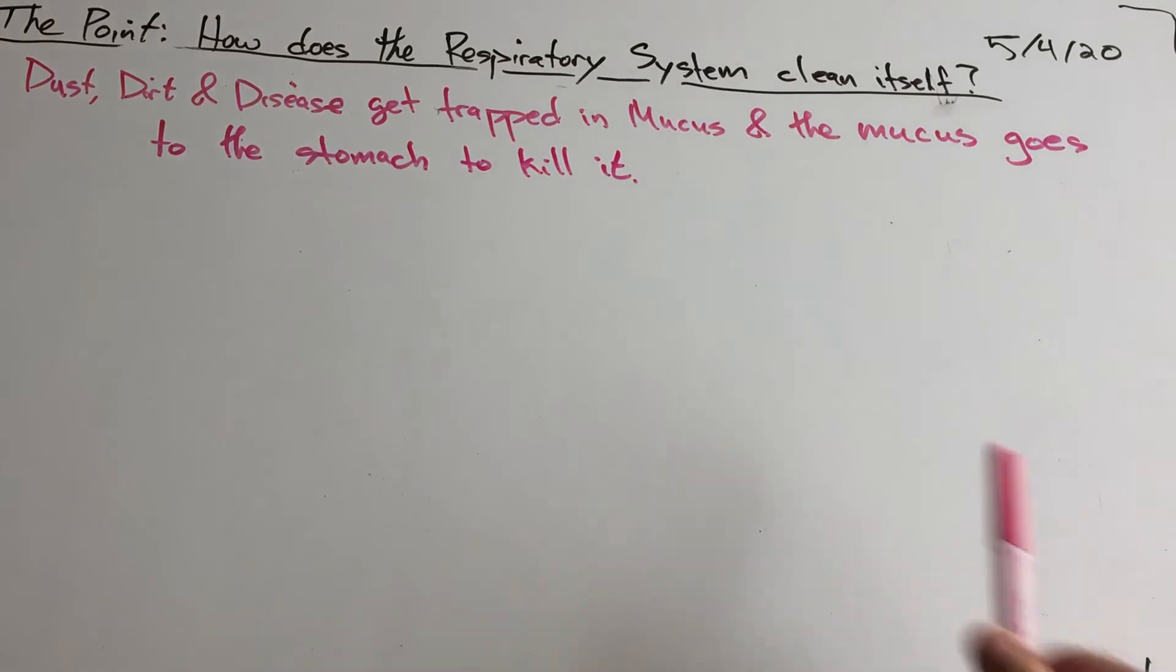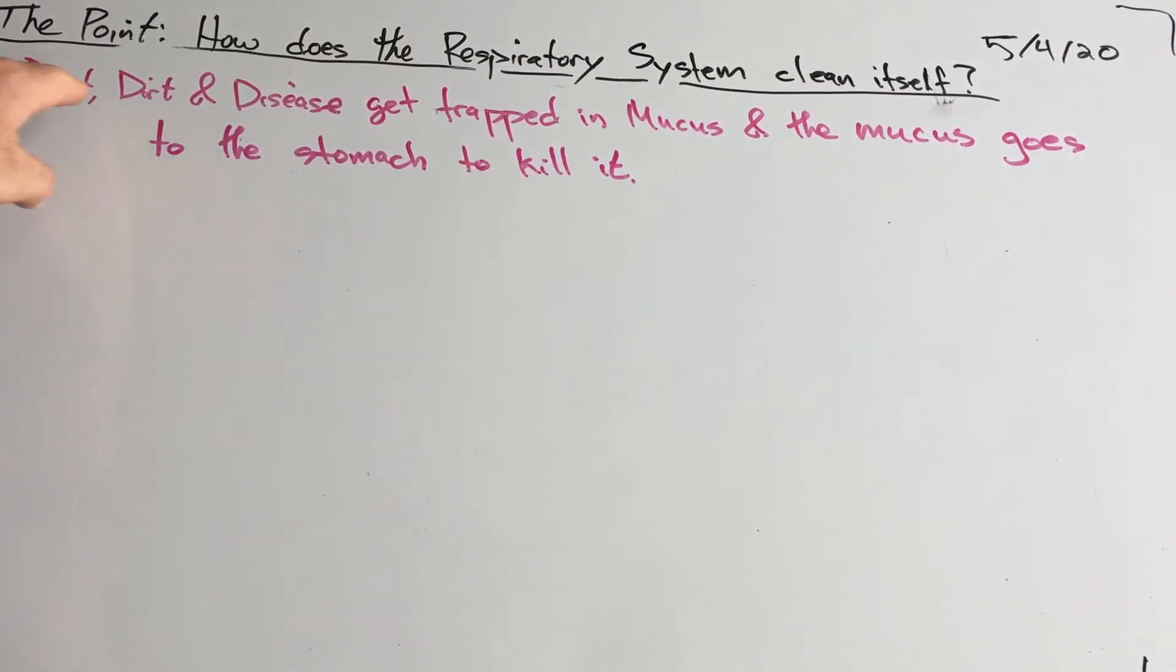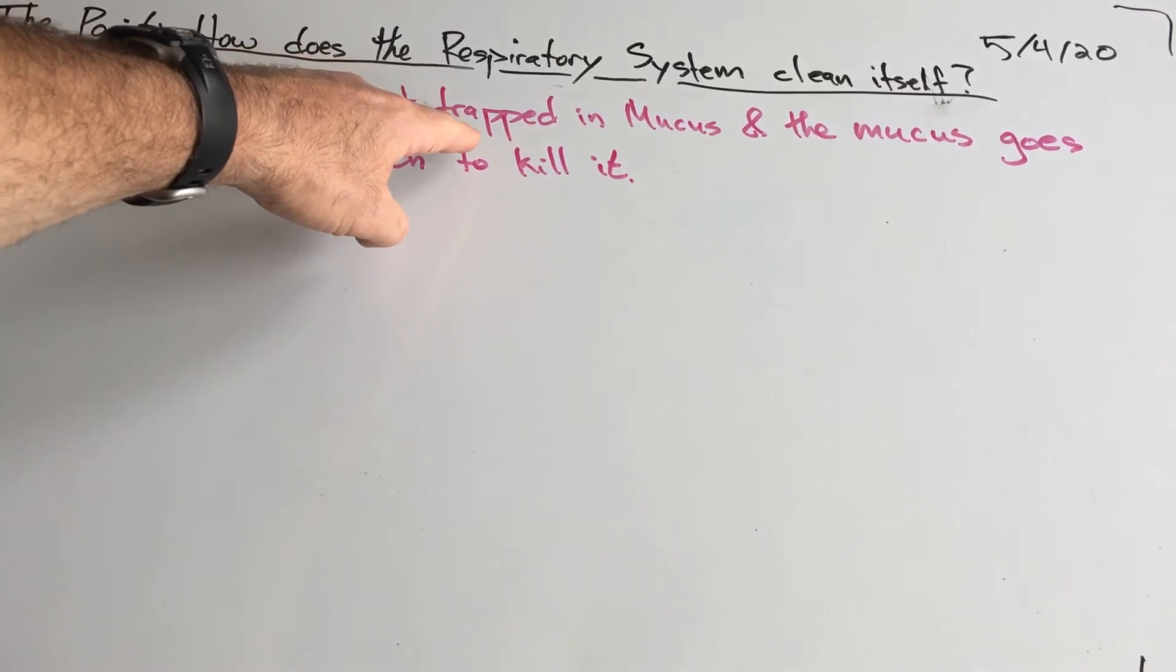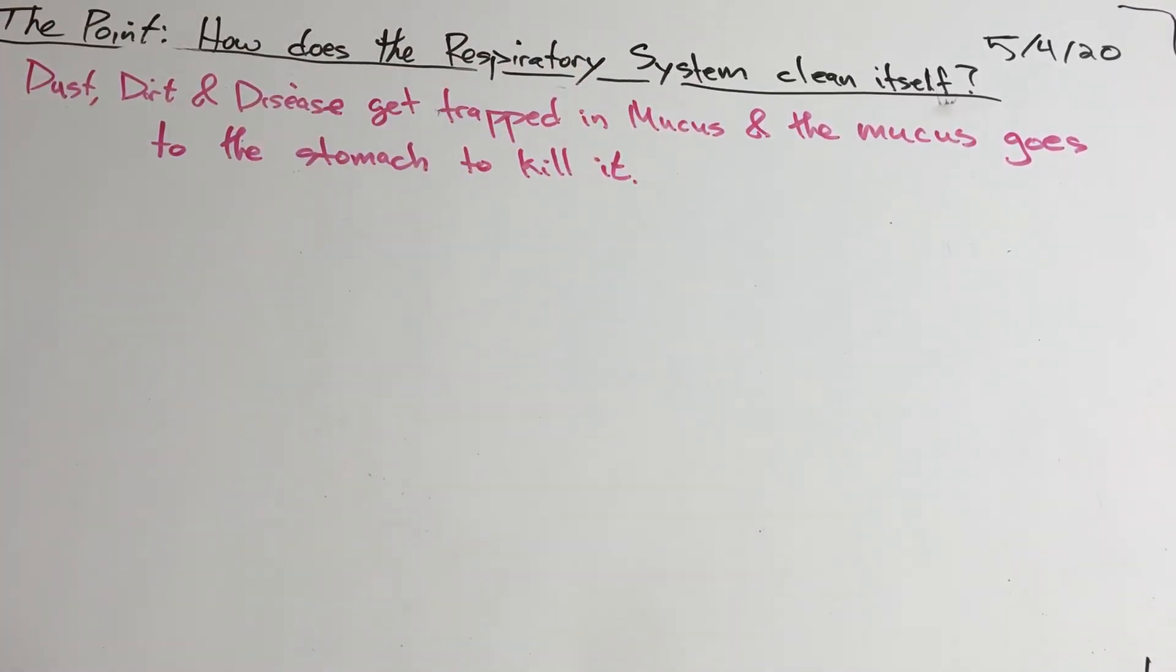All the dust, dirt, and disease along with pollutants, smoke, bacteria, and everything else that you breathe in—all that gets trapped in the mucus, and then the mucus goes to the stomach, and the stomach just has the acid to kill it.